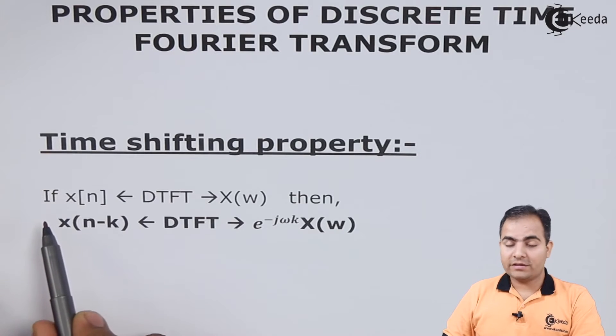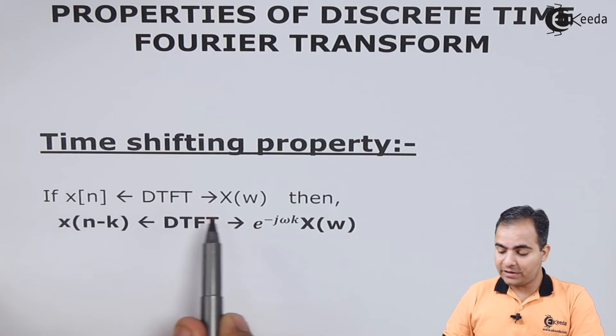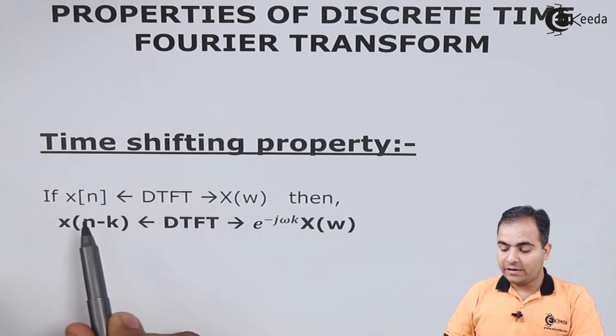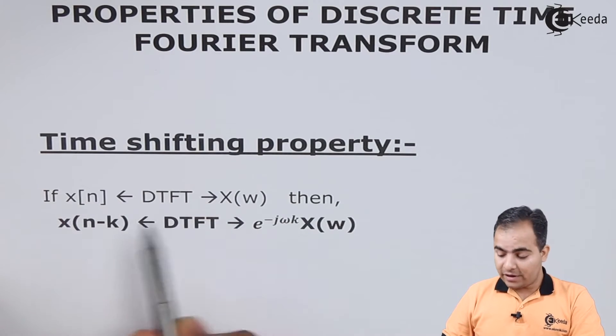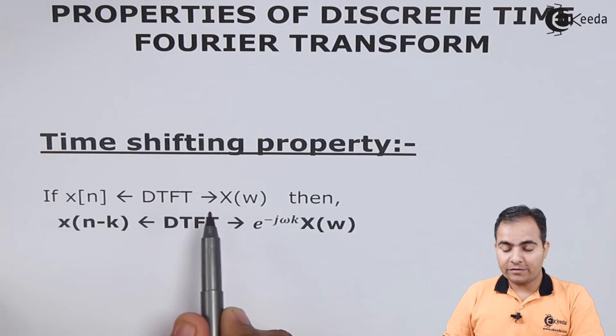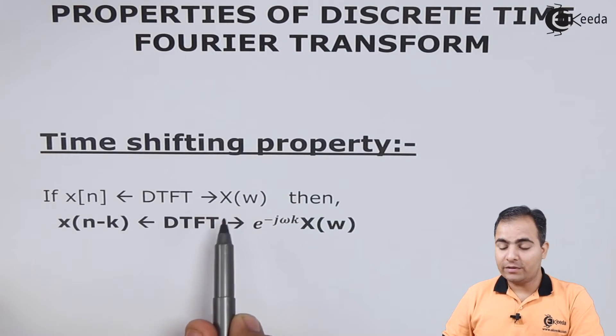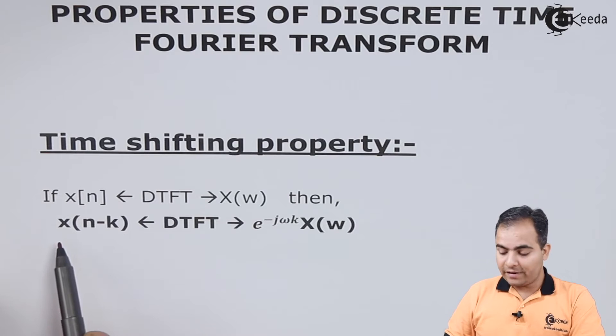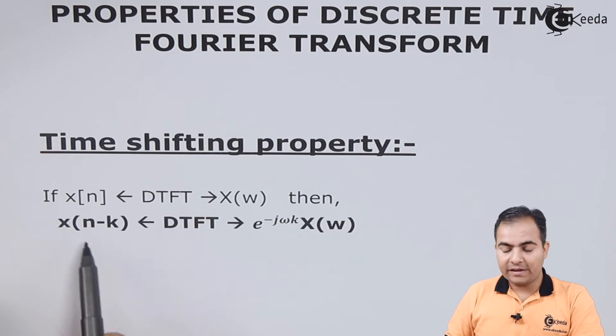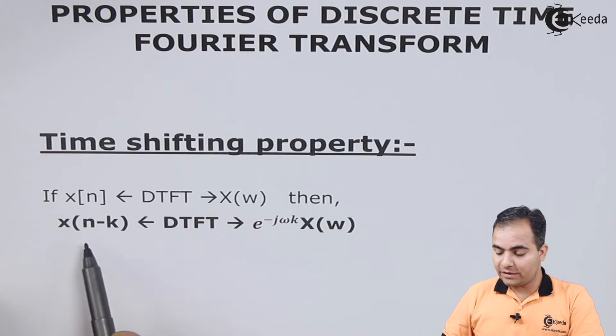The statement is: if x[n] has discrete time Fourier transform X(ω), or we can say that x[n] is transformed into discrete time Fourier transform and represented by X(ω), then if I delay this x[n] by k, the discrete time Fourier transform of x[n-k]